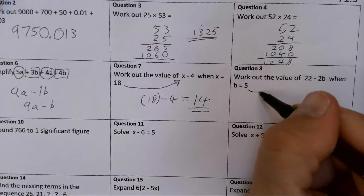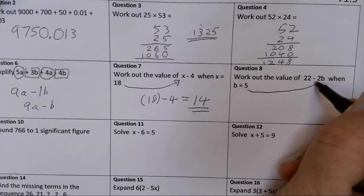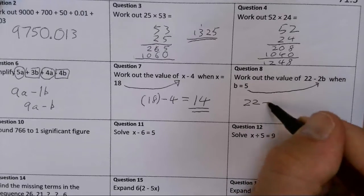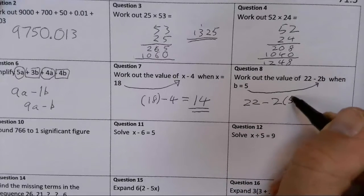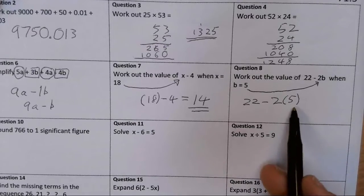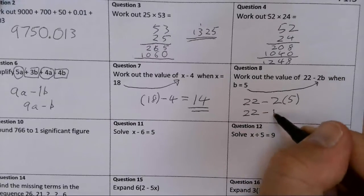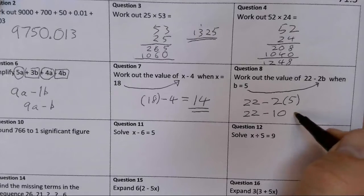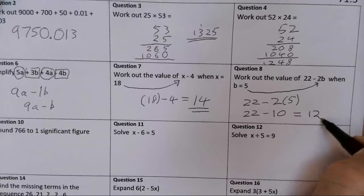When B is 5, I substitute it in. So I've got 22 take away 2B. Now, if they're next to each other, we multiply them, so I get 22 take away 10. So 22 take away 10 is 12.